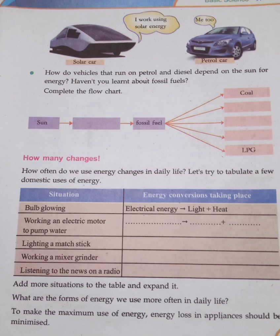To make the maximum use of energy, energy loss in appliances should be minimized. Energy fluctuations in the universe and the momentum of energy should be considered when searching for faster and other energy sources.